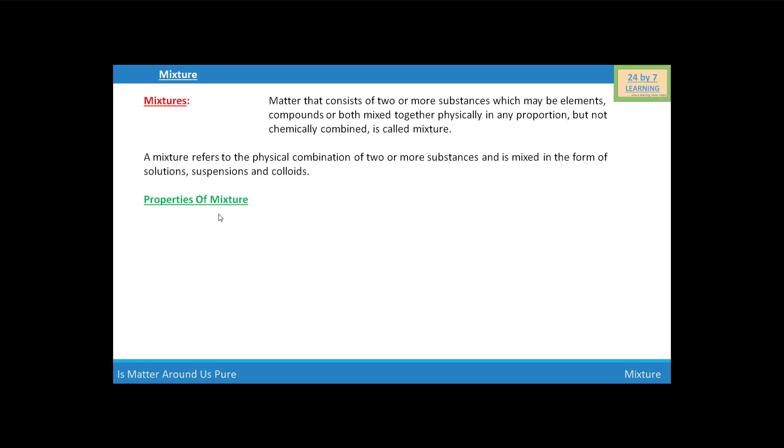Next, we are going to discuss the properties of the mixture. In a mixture, there is no definite proportion in which the constituents of a mixture combine. For example, the mixture of salt and sand can be in any ratio.